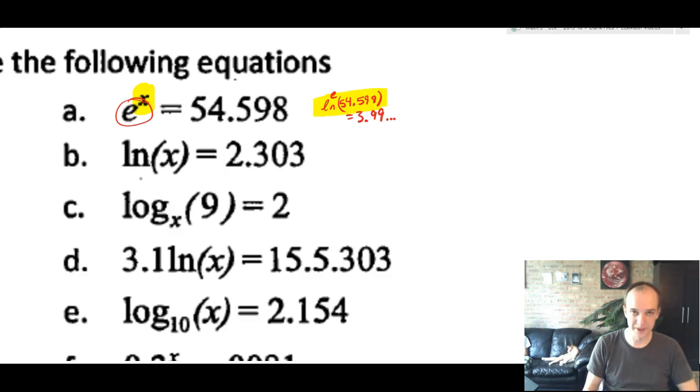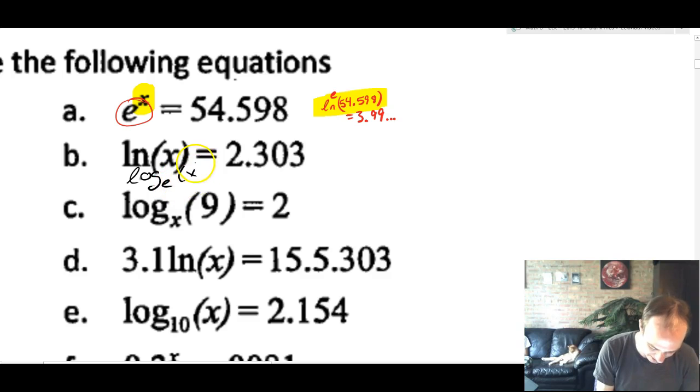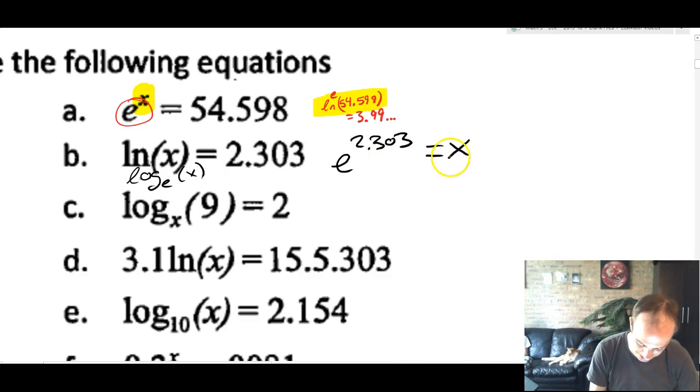We're going to speed up as we go through these next ones. Natural log is log base e of x. That's the same thing. So this is saying that e to the 2.303 will equal x. You can do this in your calculator and it should match what you get on the answer sheet.